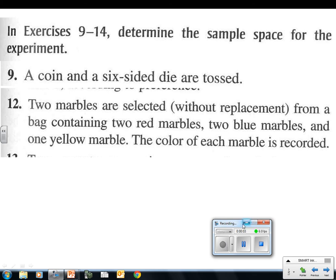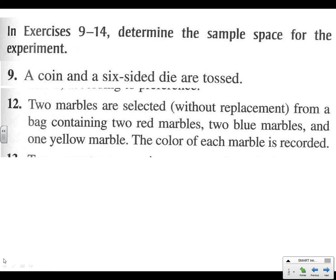Alright, nine sevens homework, last section in chapter nine. Problem twelve: Two marbles are selected without replacement from a bag containing two red, two blue, and one yellow marble. The color of each marble is recorded and we want to determine the sample space.